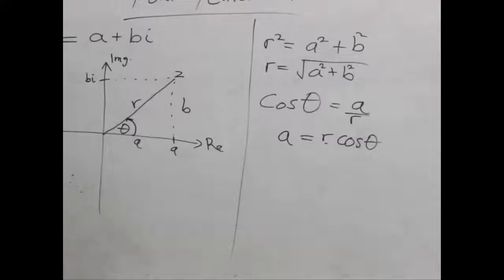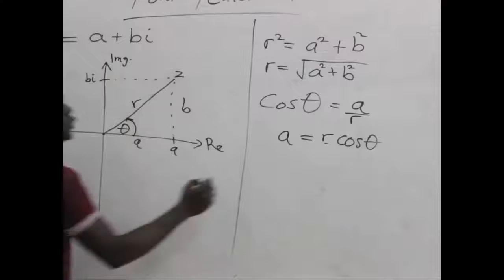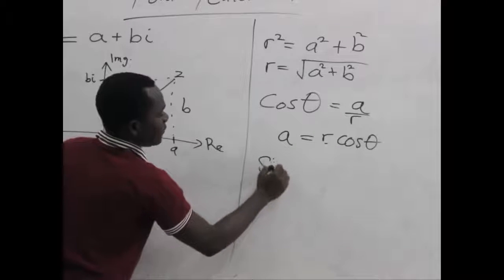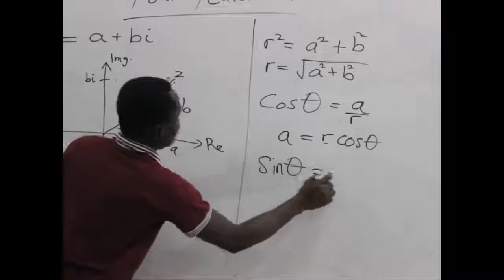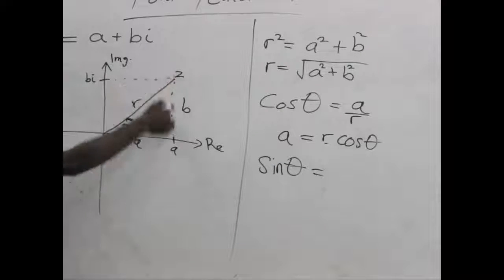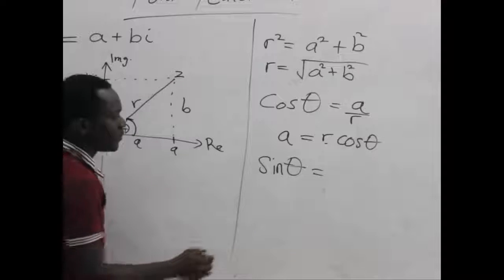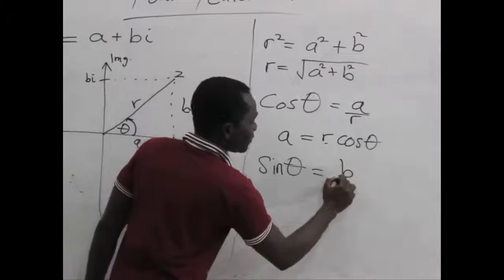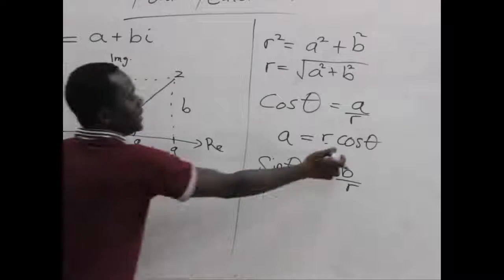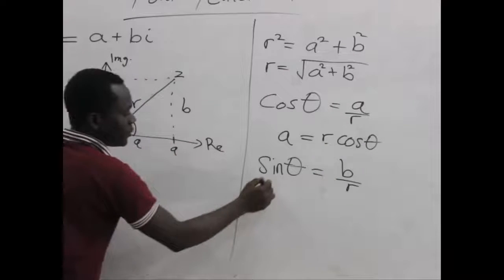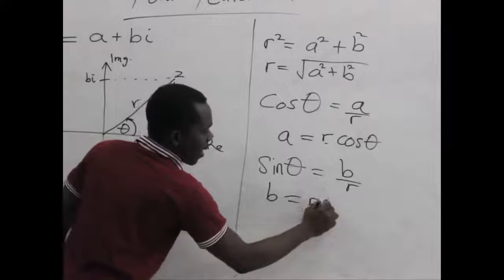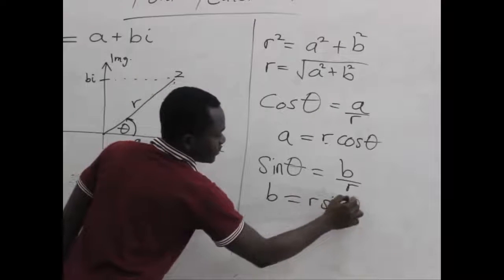Now, let's also take the sine of the angle made by the complex number. When we take the sine of the angle, that gives us the opposite side, which is facing the angle, over the hypotenuse, which is B over R. Now, trying to make B the subject by cross-multiplying, I will get B to be equal to R sine theta.